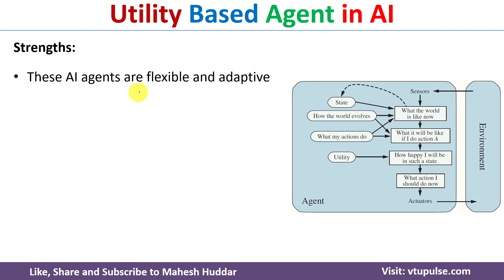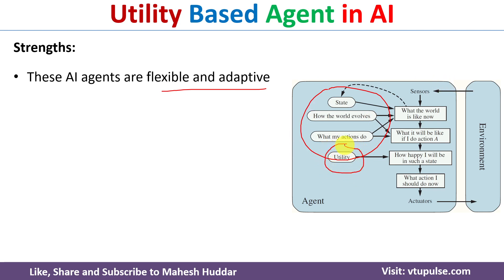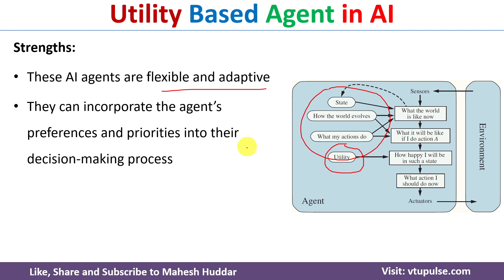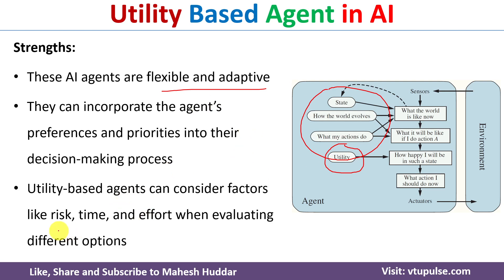Now we will discuss some of the strengths of utility based agents. These AI agents are flexible and adaptive — they learn from past experiences that are stored in an internal model, and they select an action which leads to the goal using the utility function, choosing the action with minimum cost. While doing all these things they consider the risk, time, and effort, and based on these factors they select the optimal action.